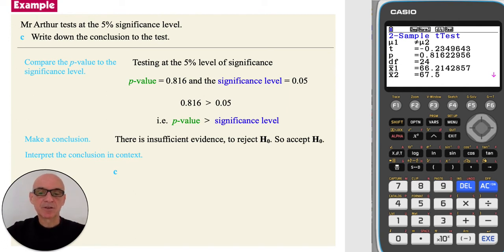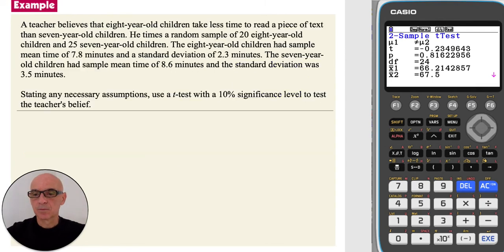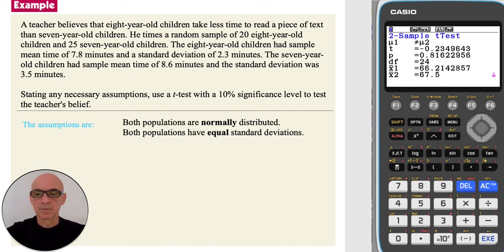Interpreting the conclusion in context, we state that there is insufficient evidence at the 5% significance level to suggest that there is a significant difference between the achievements of the two groups. When using a t-test to compare the means of two populations, the assumptions are that both populations are normally distributed and that both populations have equal standard deviations.